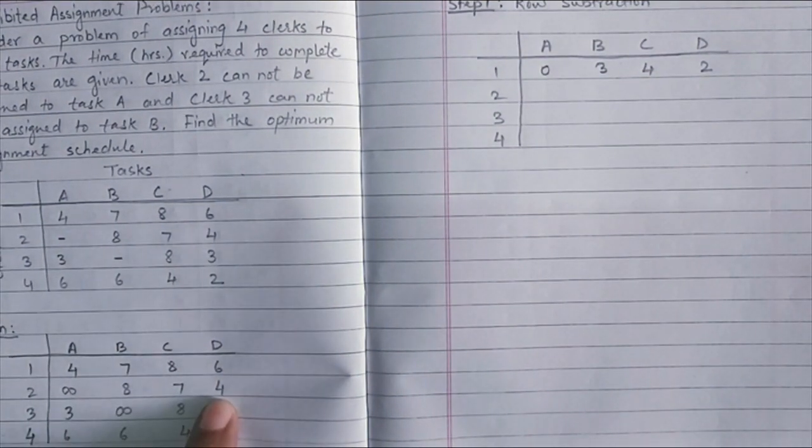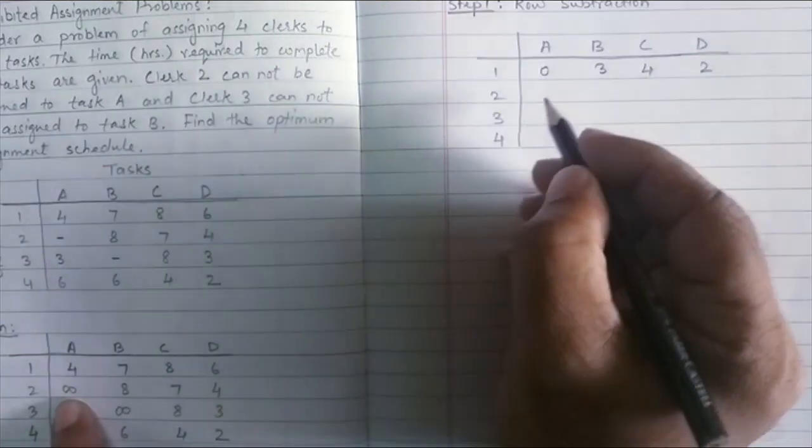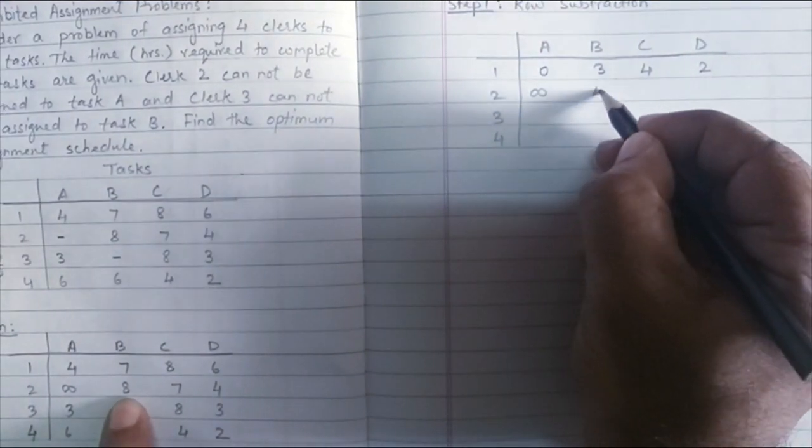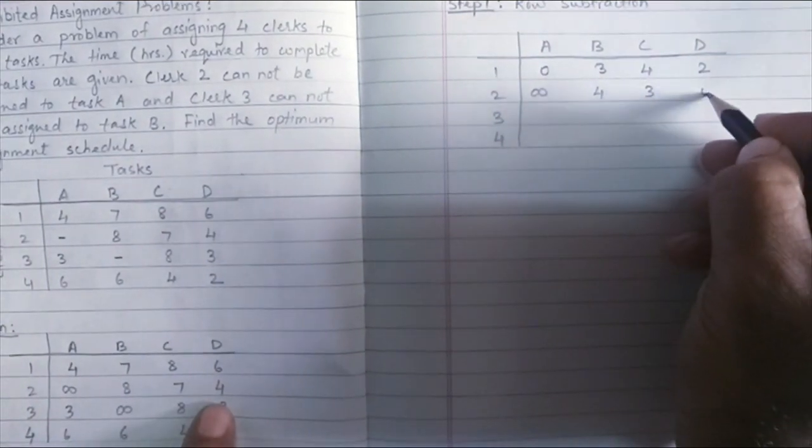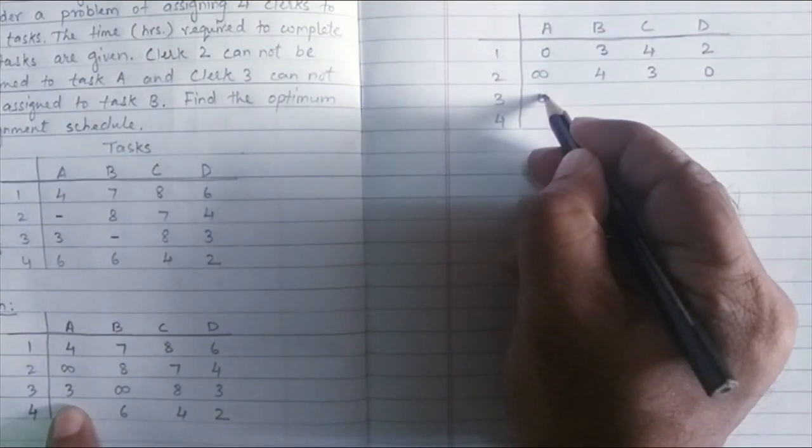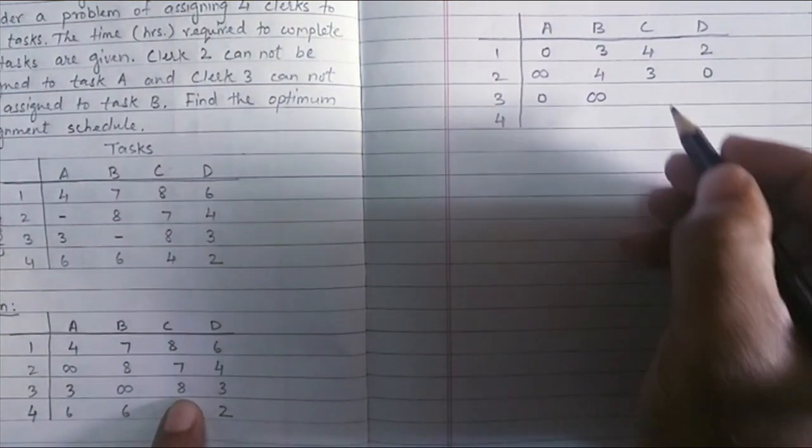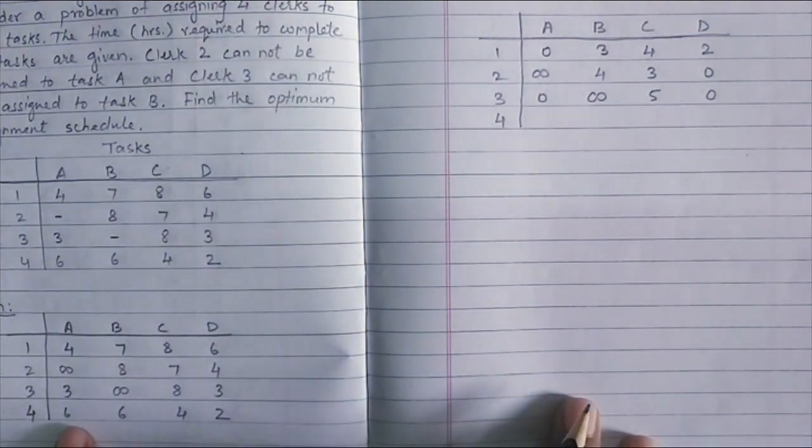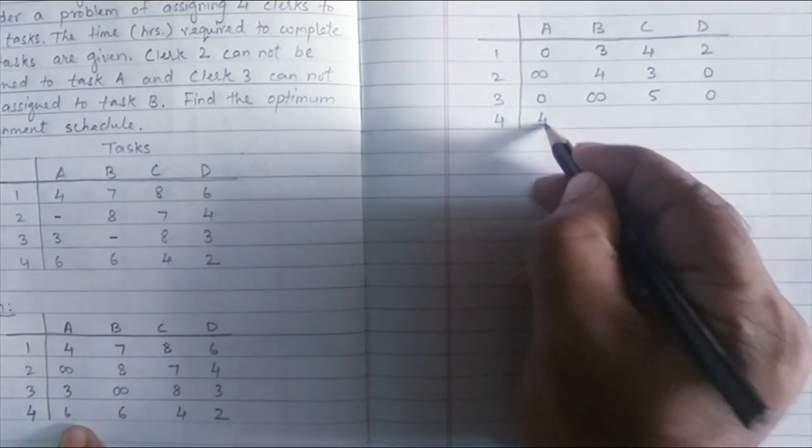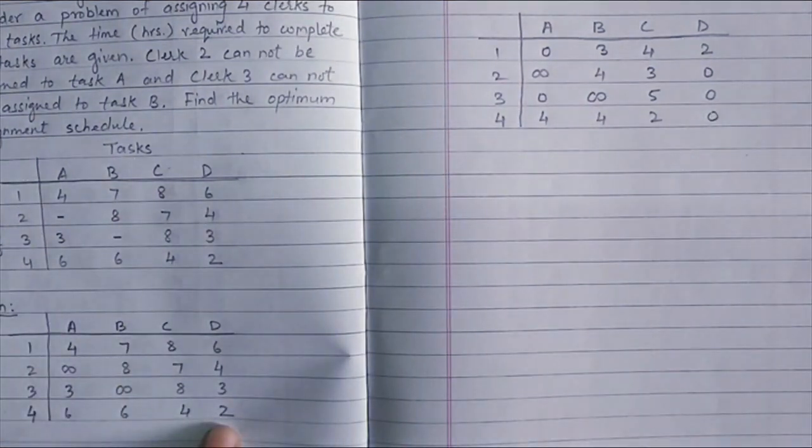For the next one, the minimum value is four here again. So let us do the subtraction. Now infinity minus four will give me infinity again. So there is no change here. Eight minus four gives me four. This gives me three. Add a zero here. Similarly, below, three is the minimum value. Three minus three gives me zero. If you subtract three from infinity, no change. Eight minus three will give me five. Three minus three will give me zero. And the last one, here we have two as the minimum value. So six minus two gives me four, four, two, and a zero.